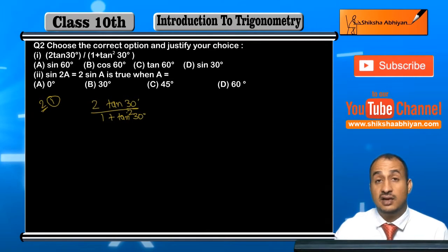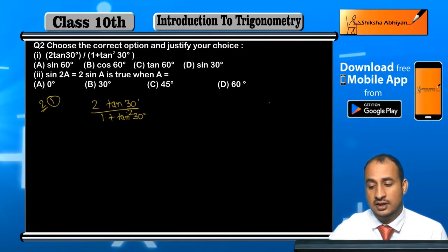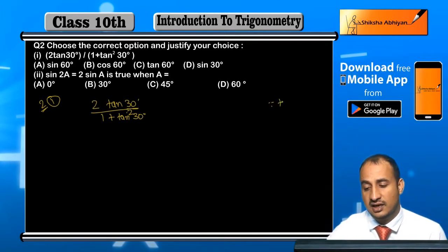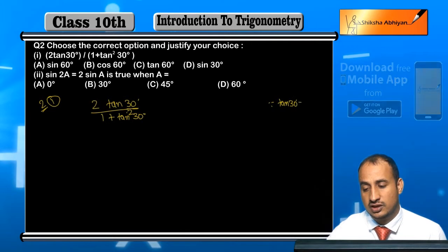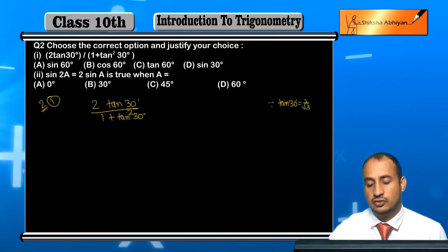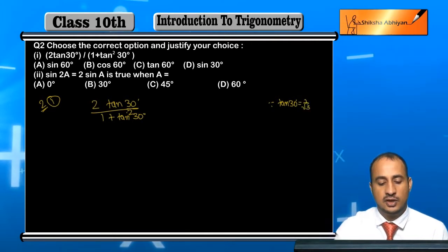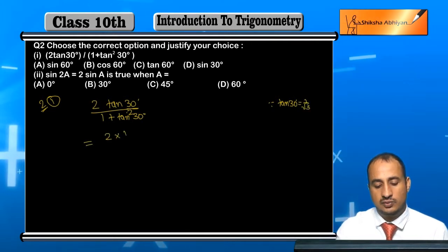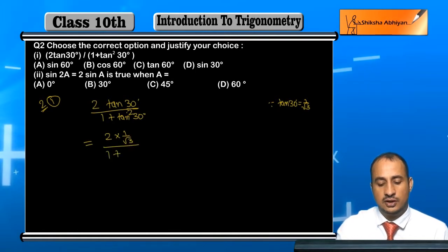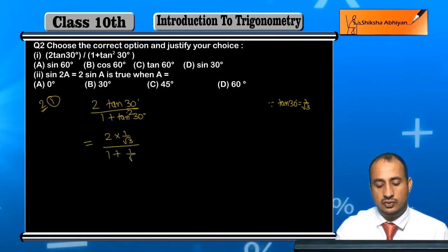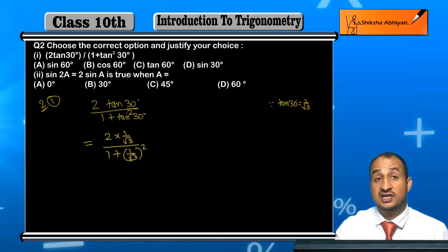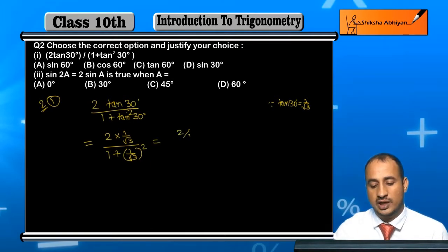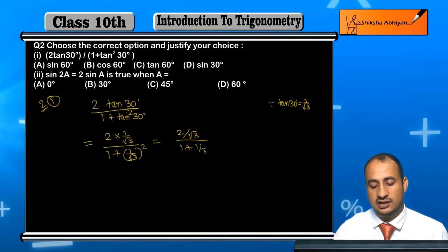Since tan30° की value कितनी होती है — tan30° की value होती है 1/√3. Using this value: 2 × (1/√3) divided by 1 + (1/√3)², which gives us 2/√3 upon 1 + 1/3.